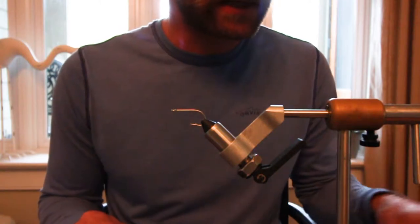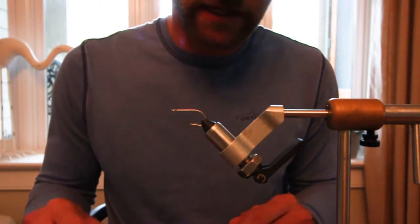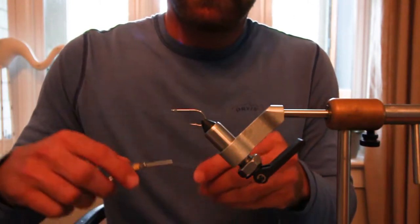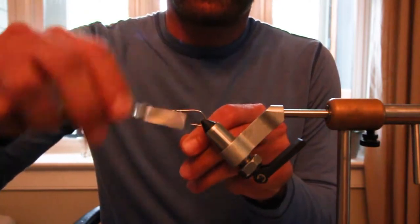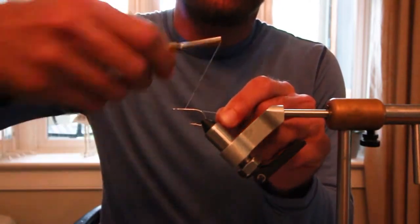So this is an Umpquist size 4 model TMC 800S saltwater hook, and I'm using white Denier 210 thread.